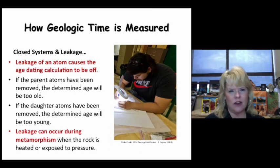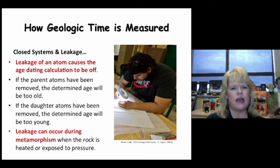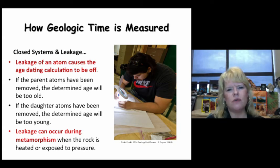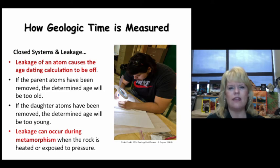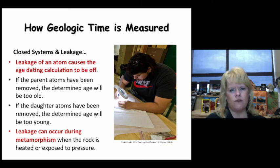Collecting an absolute date on a rock requires a multi-step process. First, you collect the rock from the field. Second, you bring it into a lab, take a cross section, shave some of the rock off, put it into either a powder or liquid form in a clean room setting, and then run it through a mass spectrometer to determine the age of that rock.